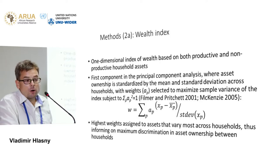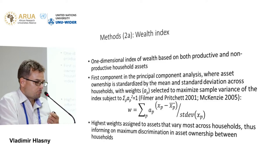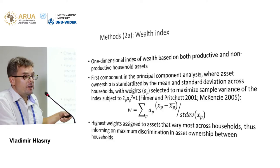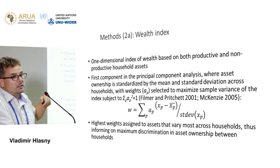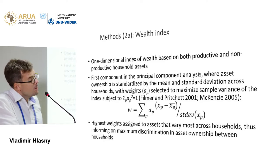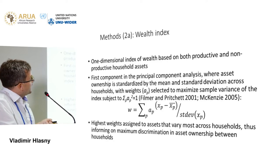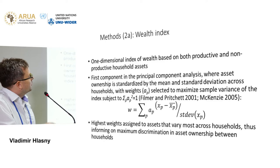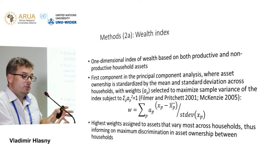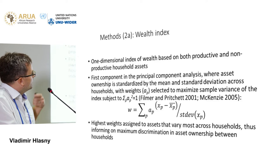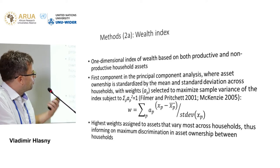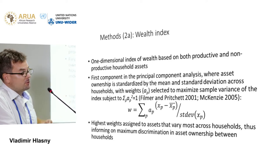Another measure of outcome can be the wealth index. Here we take advantage of the different variables in the surveys on household assets and productive agricultural assets — the amount of land that households own — to improve a bit on the standard approach. We really try to include all of the available household assets, particularly because we're thinking that some of these migrants come from rural areas and it's important to include assets that are typically owned in rural areas rather than cities.